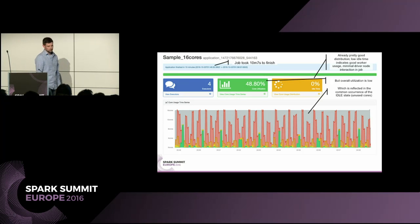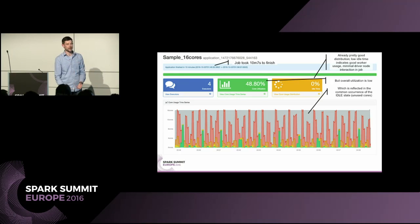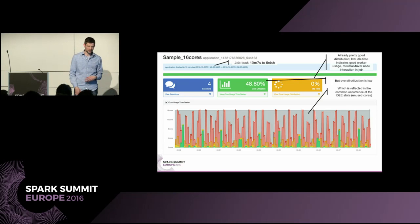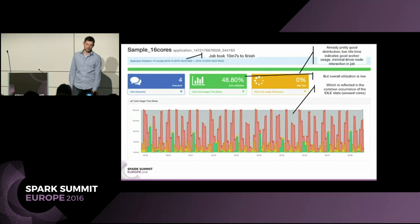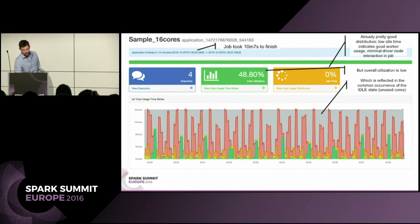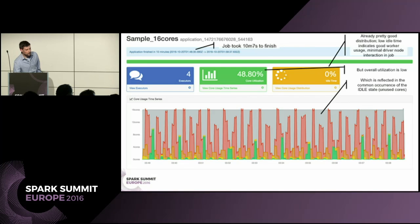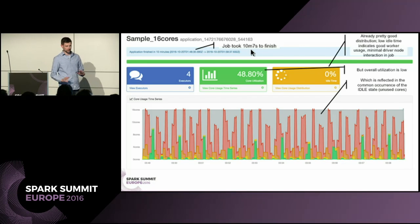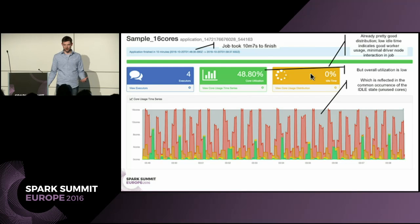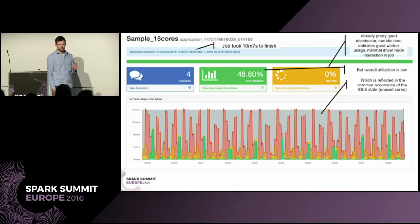I'm going to walk you through the sample job — essentially three reduced-by-key steps on top of some data gathering — doing a hypothetical tuning process. We take this job, stick it on our server, and run it. We start with 16 cores across four executors as our starting point. When you analyze this, the job took 10 minutes 7 seconds to finish — that's our not-even-trying baseline. We've got zero idle time, which is saying you're doing kind of the right thing — you're allowing the workers to do their job. But overall utilization is below 50%, pretty low, and you can see a lot of idle gray in the graph with all of these spikes.